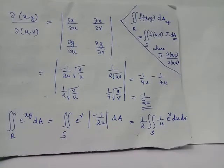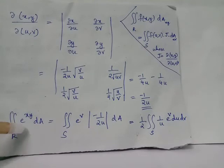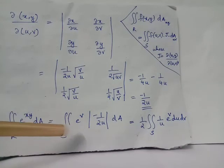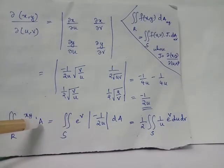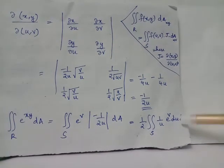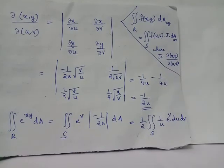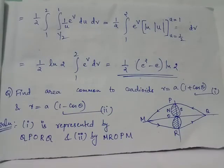The double integral over R of e^(xy) dA can be rewritten as a double integral over S in the uv-plane. Since v = xy, e^(xy) becomes e^v. dA is replaced by |J| du dv, where the Jacobian is -1/(2u), and since the Jacobian uses a modulus, the negative sign disappears. The integrand becomes (1/u)·e^v, with u varying from 1/2 to 1 and v varying from 1 to 2.